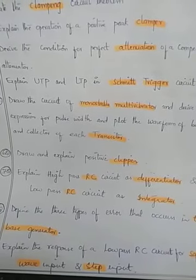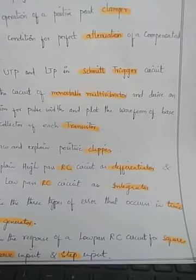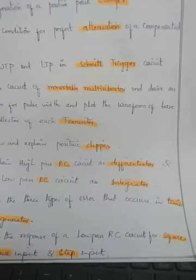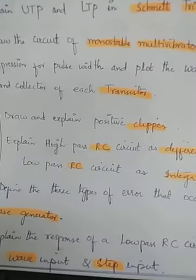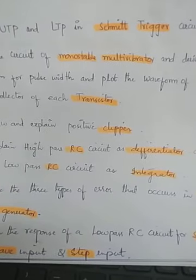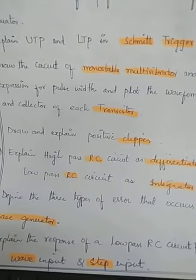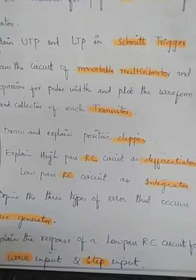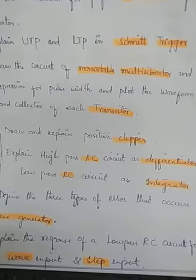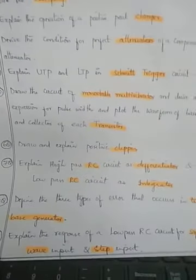Next: explain the high pass RC circuit as a differentiator and the low pass RC circuit as an integrator. We have learned the RC circuitry for integrator and differentiator. You have to write the derivation and explain the terms regarding the given conditions.